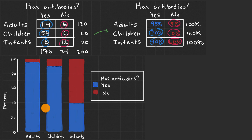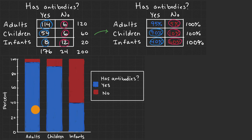This is pretty useful to visually see — it looks like adults are much more likely to have the antibodies than children, and children are far more likely to have the antibodies than infants. You could have also made a bar for have antibodies and another for not have antibodies, segmented by whether they are adults, children, or infants. But that would be trying to understand whether having antibodies is predictive of whether you're an adult, child, or infant, whereas this way makes more sense — that whether you're an adult, child, or infant might be predictive of whether you have antibodies.